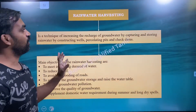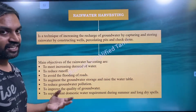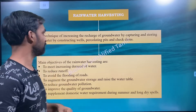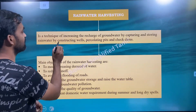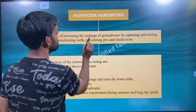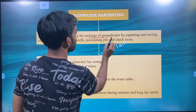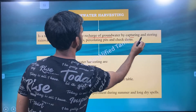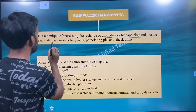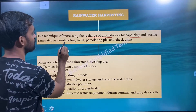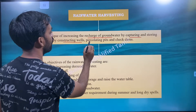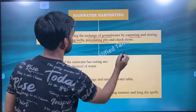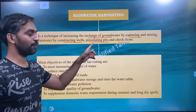Rainwater harvesting is a technique of increasing the recharge of groundwater by capturing and storing rainwater by constructing wells, percolating pits, and check dams.